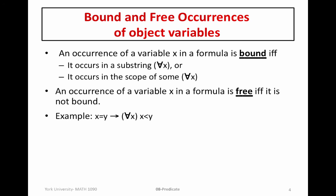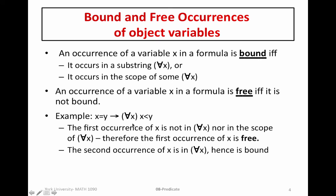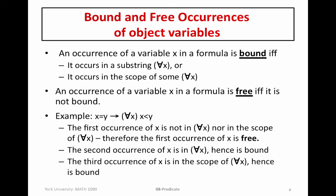Let's look at another example. We'll consider our previous example: x equals y implies for all x, x less than y. Is the first occurrence of x bound or free? You are correct if you said free, since this occurrence of x is not a variable within a quantifier, nor is it in the scope of any quantifier. What about the second occurrence of x — is it bound or free? You are correct if you said it's bound, since it is the variable within the quantifier. And the third occurrence of x — bound or free? You are correct if you said bound, since it's in the scope of this quantifier. That ends this section of the video, and we'll next look at subformulae and abstractions.